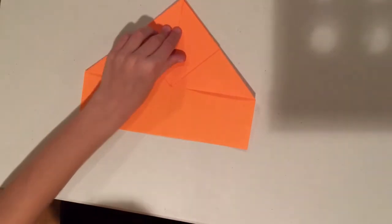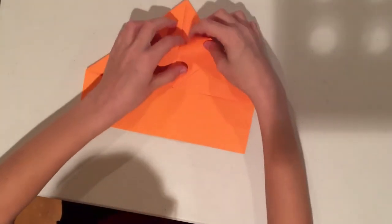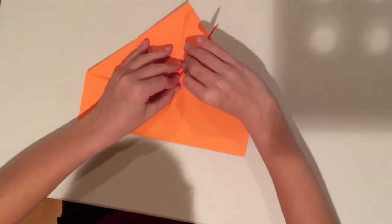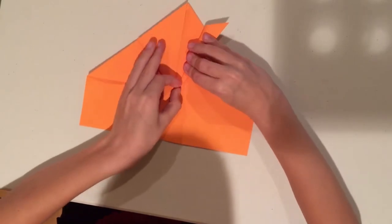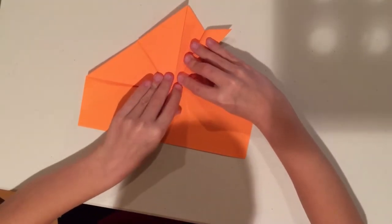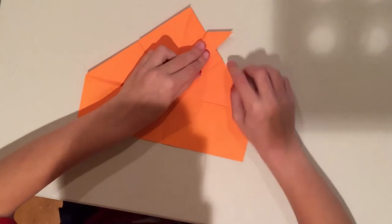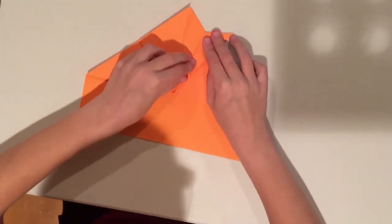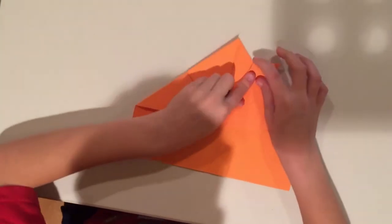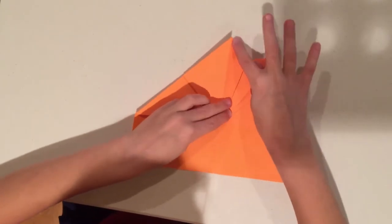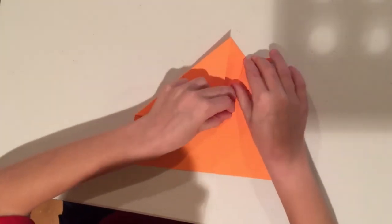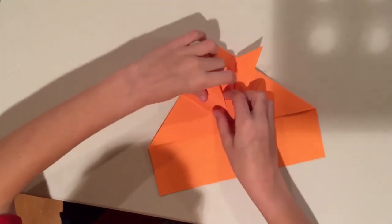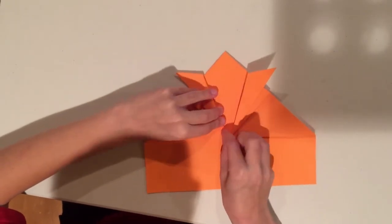And now you can just fold it, leaving a little bit of space at the bottom, just so that this corner is aligned with that edge. And repeat on the other side.